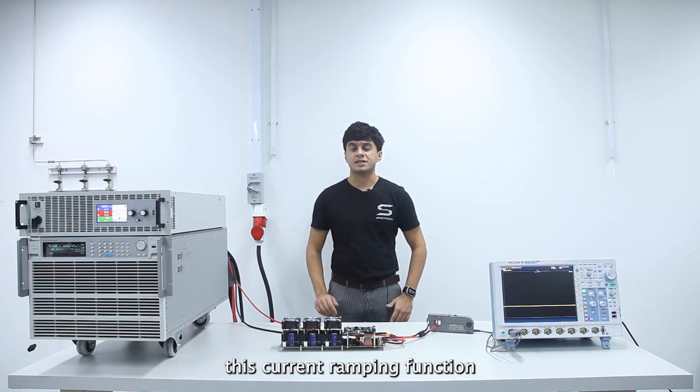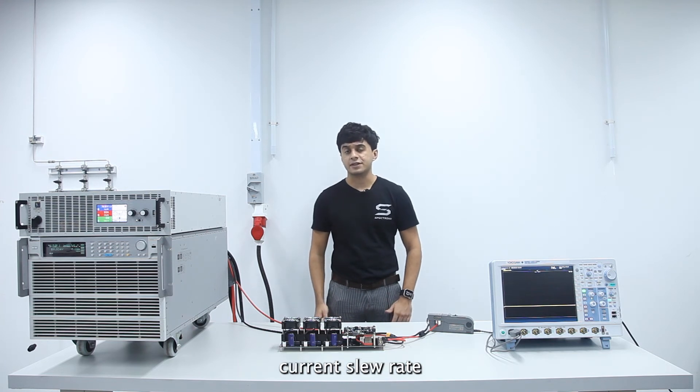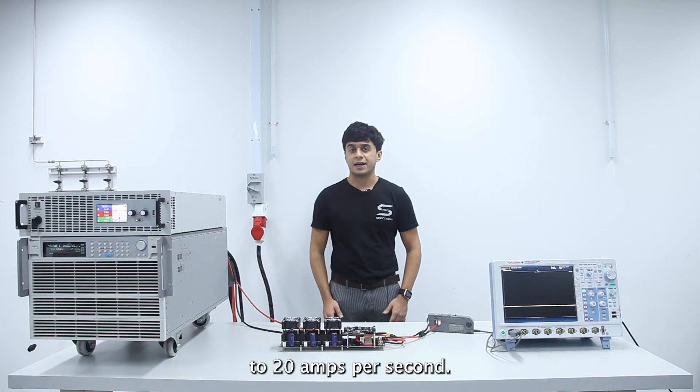The Cerebro 55 supports this current ramping function at a user configurable output current slew rate, ranging from 1A per second to 20A per second.